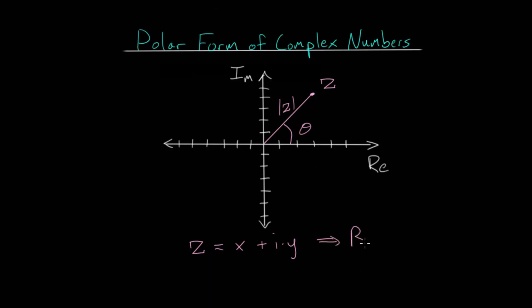Which we call its rectangular form, or we can use its polar form relating the complex number z to its magnitude and its direction, its angle. Now, to essentially convert this rectangular form to polar form, we need to consider a little bit of trigonometry.